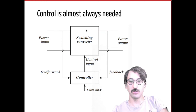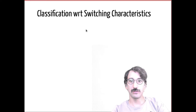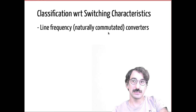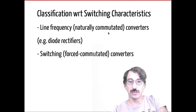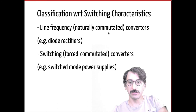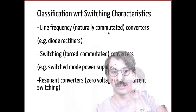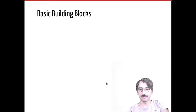We can classify power electronic devices with respect to their switching characteristics. Either you can have line-frequency converters, called naturally commutated converters, such as diode rectifiers connected to grid systems, or you can have force-commutated converters — switching converters — for example MOSFET converters or switch-mode power supplies. There are also resonant power converters, which switch at zero voltage or zero current.